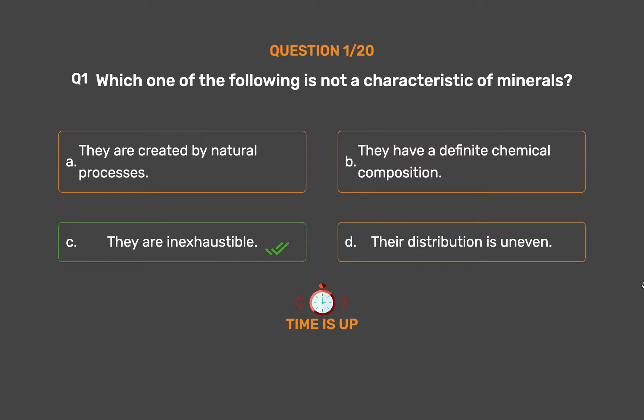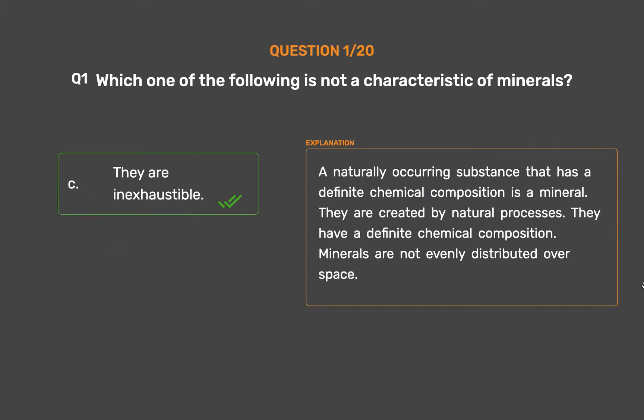The correct answer is Option C: They are inexhaustible. A naturally occurring substance that has a definite chemical composition is a mineral. They are created by natural processes and have a definite chemical composition. Minerals are not evenly distributed over space.